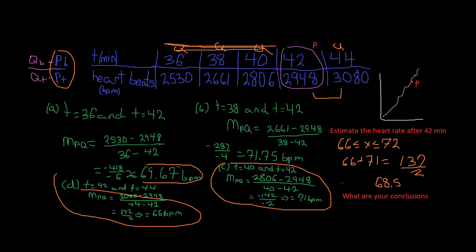Alternatively, we can take the average of the two secant lines closest to P — one on each side — and that gives us an approximation of 68.5 beats per minute. This represents the instantaneous beats per minute, since all the individual secant line values represent average beats per minute. So the estimate is 66 ≤ x ≤ 72 beats per minute.